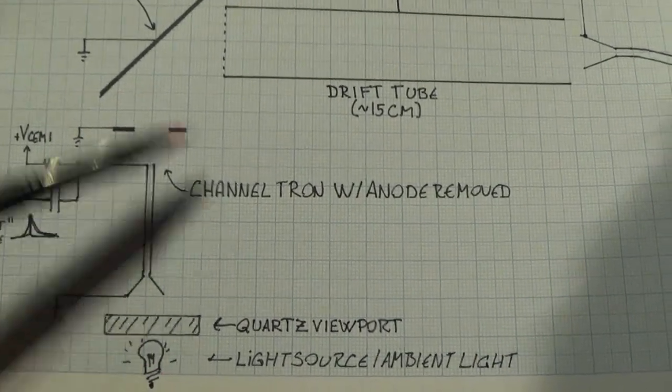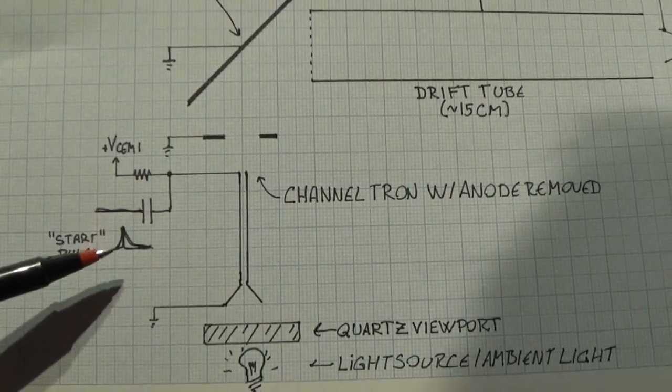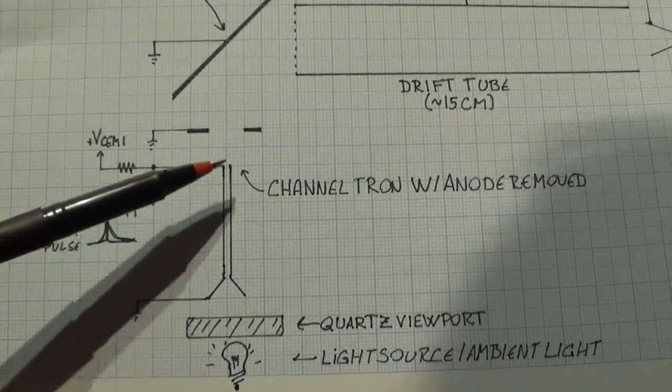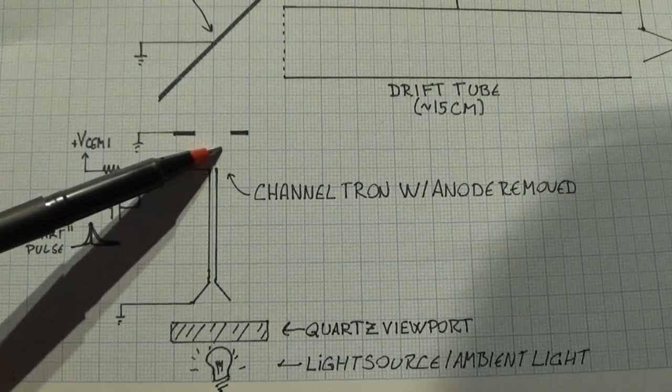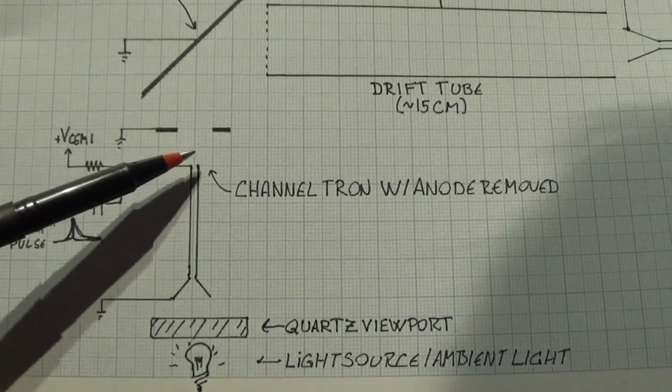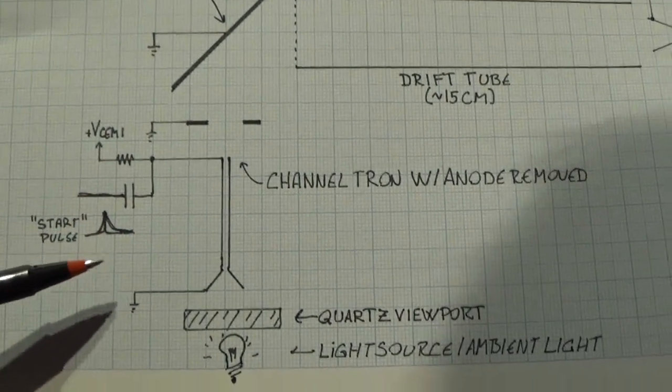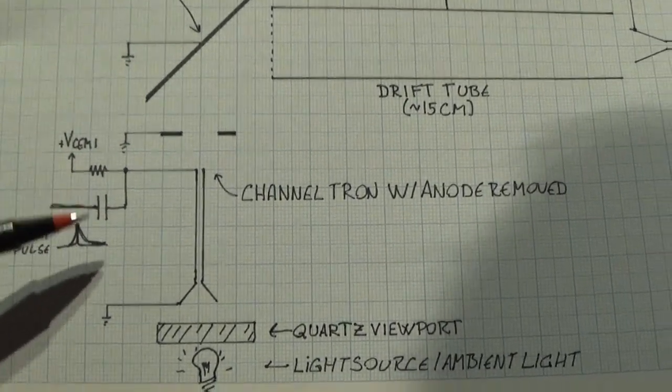This is basically a homemade PMT, I guess. And the pulses will be positive because we are not taking the electrons from the anode, so we don't collect electrons. We actually lose electrons so we get the opposite polarity pulse. That's a bit confusing, but I think that's how it is. We'll see when I build it.